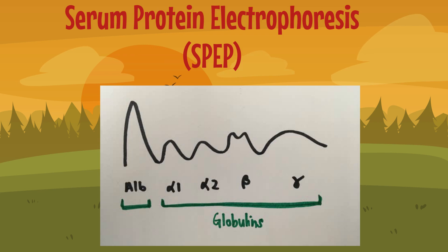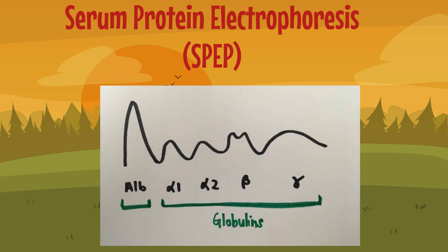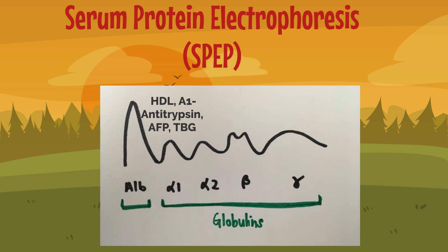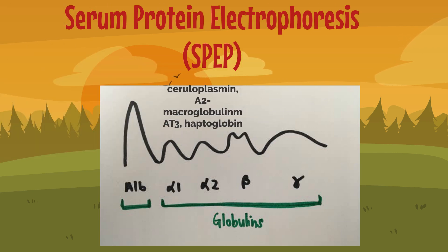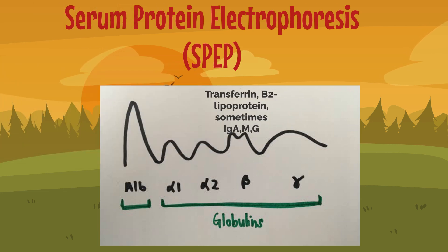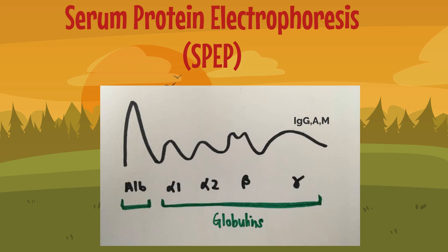If you were to separate the trees in this periprotein forest through a special sieve — this special sieve being serum electrophoresis — and plotted on a graph, you'd get a chart that looks something like this. The first tall spike is albumin. The second hump is the alpha-1 region and its associated proteins. The third hump is the alpha-2 region, the next hump is the beta region, and the last hump is the gamma region with its proteins.